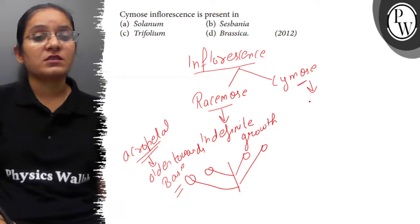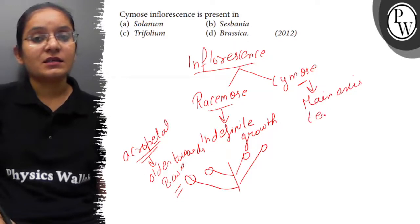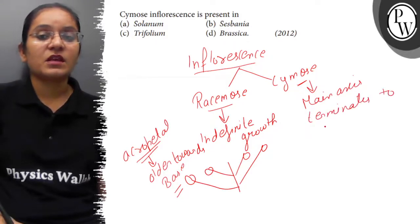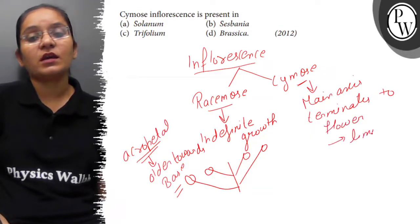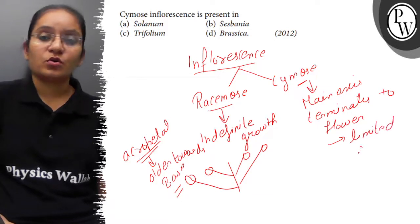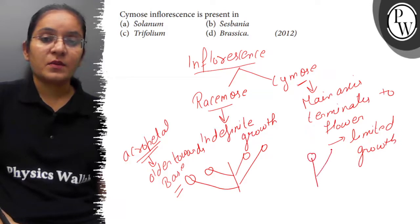While cymose type of inflorescence, main axis terminates into flower. That's why it shows limited growth. Here, plant growth will be limited. The main axis terminates into flower.